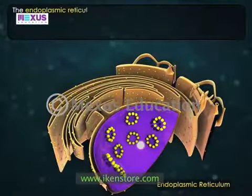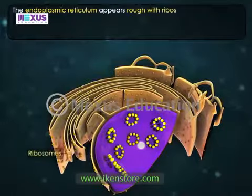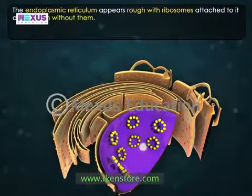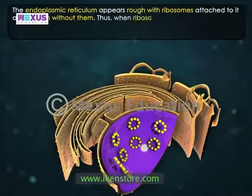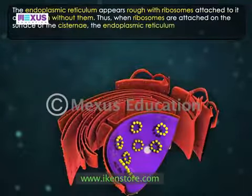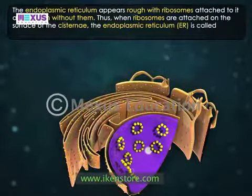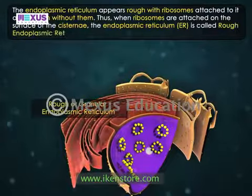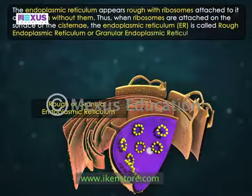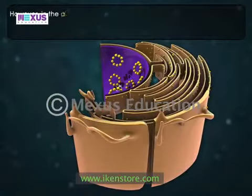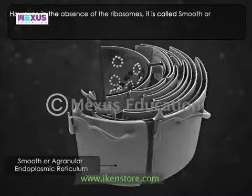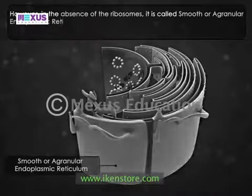The endoplasmic reticulum forms the supporting framework of the cell and serves as a pathway for the distribution of materials from one part of the cell to the other. The endoplasmic reticulum appears rough with ribosomes attached to it and smooth without them. When ribosomes are attached on the surface of the cisternae, the ER is called rough endoplasmic reticulum or granular endoplasmic reticulum. In the absence of ribosomes, it is called smooth or agranular endoplasmic reticulum.